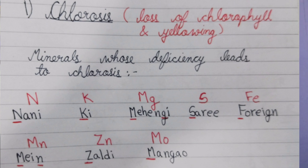The minerals that cause chlorosis include nitrogen, potassium, magnesium, sulfur, iron, manganese, zinc, and molybdenum. The mnemonic I have designed is: 'Nani ki mehengi saari foran mein jaldi mangao.'